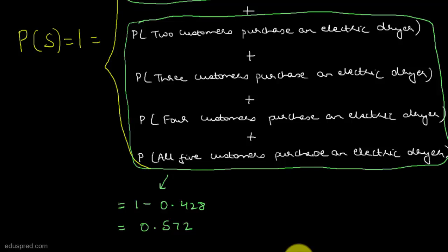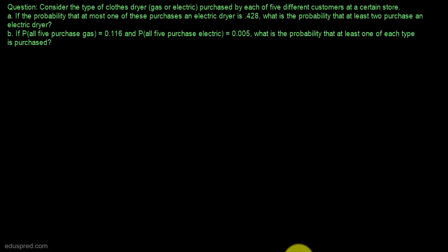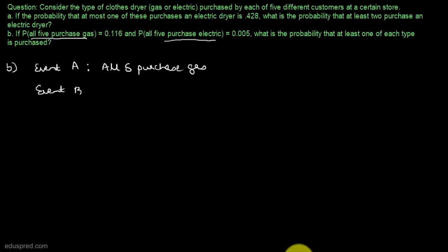Now let's move to part B. In part B, it is given that the probability that all five purchase gas is equal to 0.116, and the probability that all five purchase electric is equal to 0.005. We have to find the probability that at least one of each type is purchased. Let event A be that all five customers purchase gas, and let event B be that all five customers purchase electric.